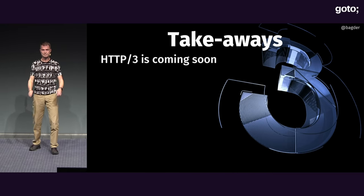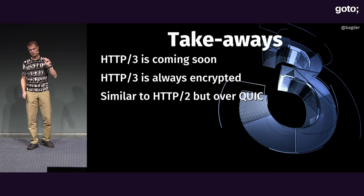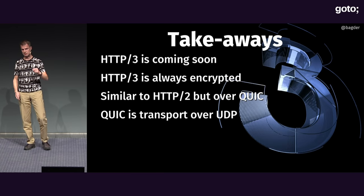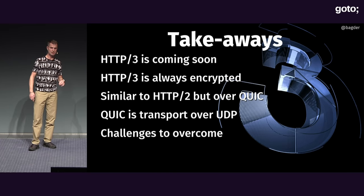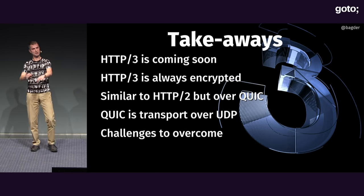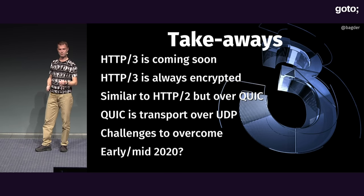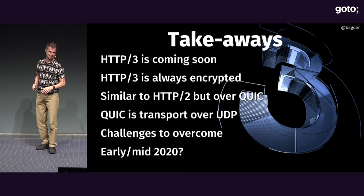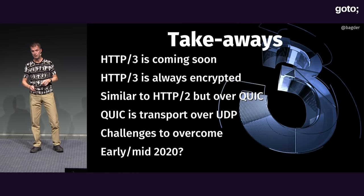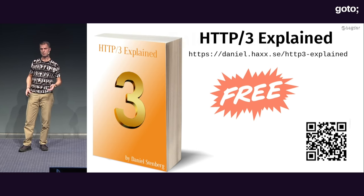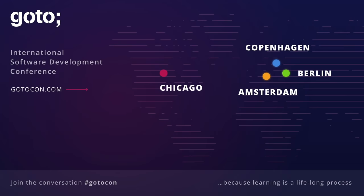Okay, to summarize: HTTP 3 is going to come soon — it's always going to be encrypted. It is very similar to HTTP 2 feature-wise and from a user perspective. It's the new transport protocol QUIC over UDP, always encrypted. There are some challenges to overcome, mostly server-side but also client-side. When will we see this? I say early-to-mid some year going forward — probably mid-2020, perhaps. I wrote pretty much what I've said today in a document you can read online. Thank you.